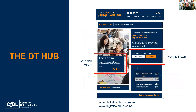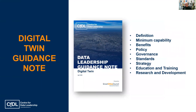We launched our digital twin hub in April. This will be the primary forum by which we'll communicate the progress of the digital twin strategy and invite feedback, comment and identification of core issues. The digital twin guidance note, which took about a year to write, was also launched in April. That provides foundational content we're bringing into the strategy — including issues and recommendations around policy, governance, standards, education and training, and research and development. The strategy will further flesh out those items originally identified in the guidance note.